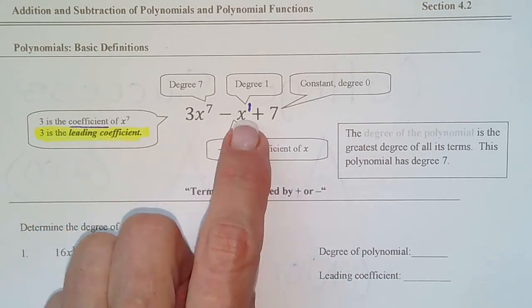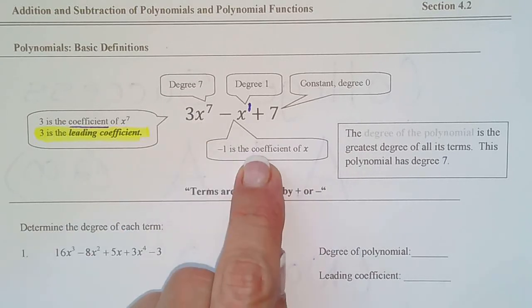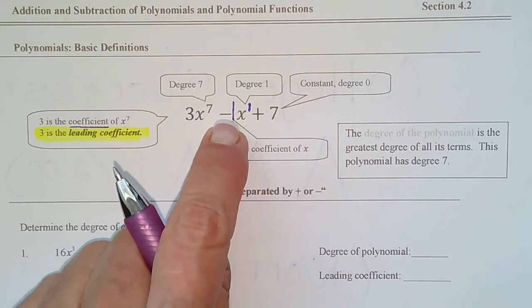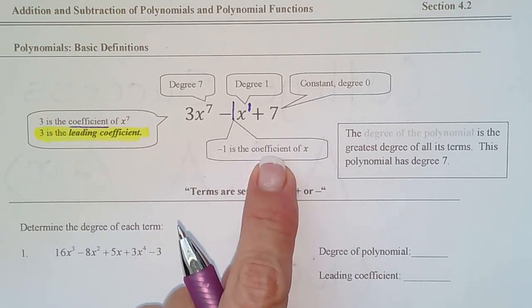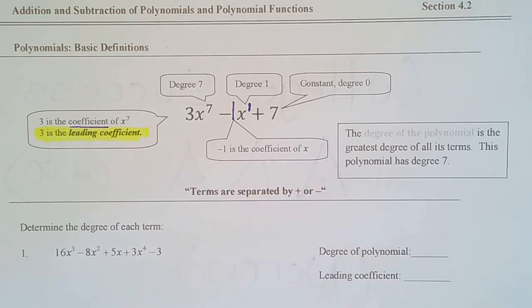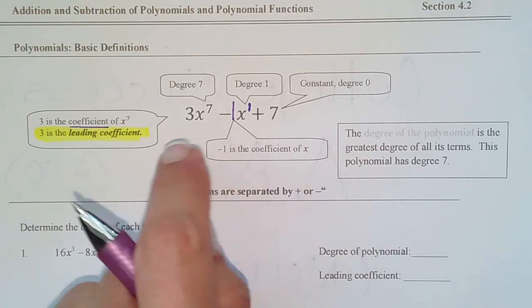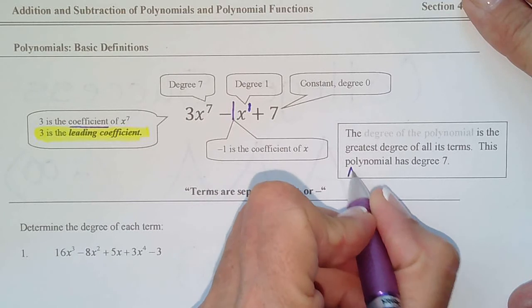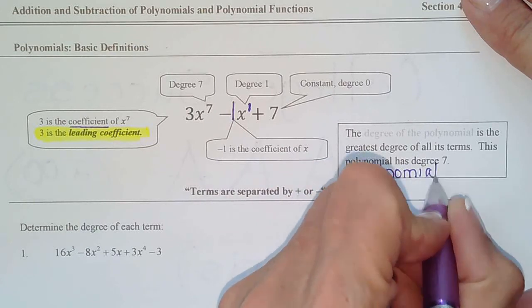To identify the leading coefficient, find the highest power — the number in front of that term is the leading coefficient. It may not be the first term; you just have to go down the line until you find the highest power. The coefficient of x is what number is in front of x, and we can assume a one is in front of any variable with no written coefficient. We take the sign too, so negative one is the coefficient of x here — not the leading coefficient, just the coefficient of x.